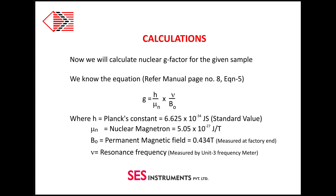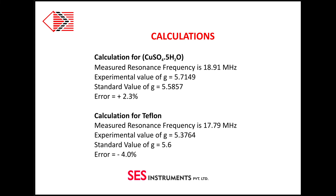This equation is taken from the user's manual provided with the equipment. The value of magnetic field strength and resonance frequency may vary piece to piece for individual NMR units supplied. As can be seen, the calculated value of G for both CuSO4·5H2O and Teflon is well within the limits of experimental error. Similarly, we can determine the value of G for other samples.